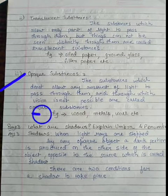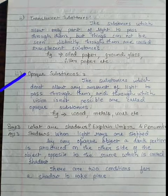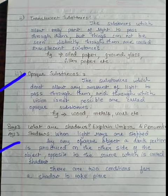Examples are wood, metals, wall, etc. Now students, third question is: what are shadows? Explain umbra and penumbra. So students, we will define shadows.